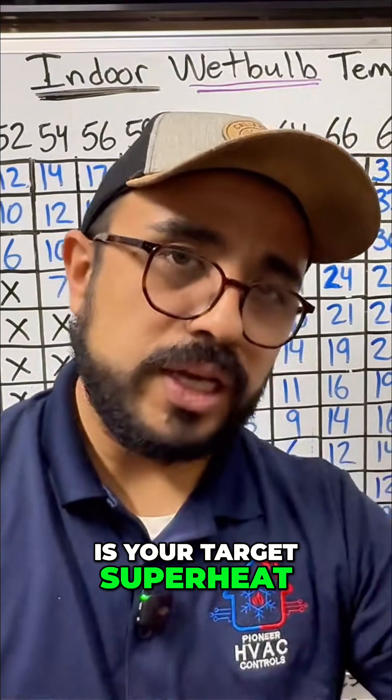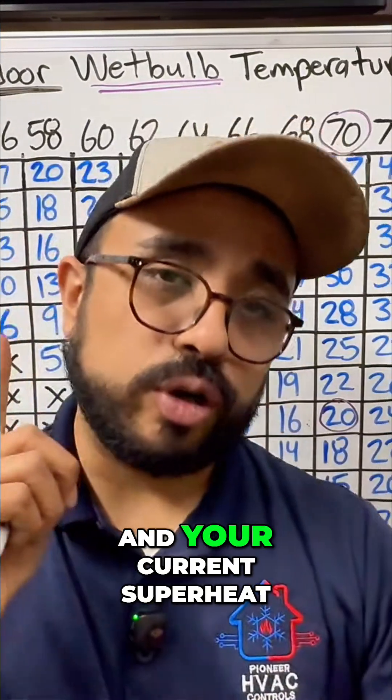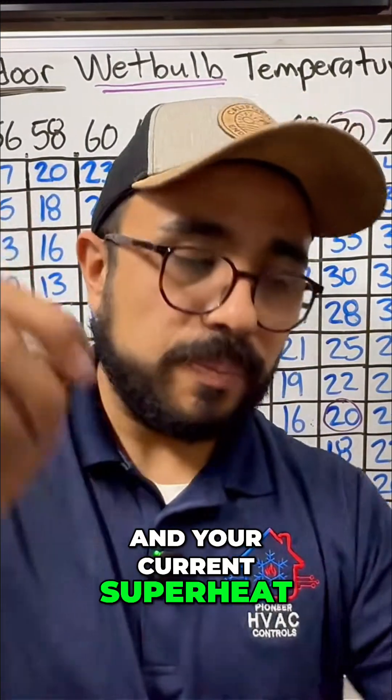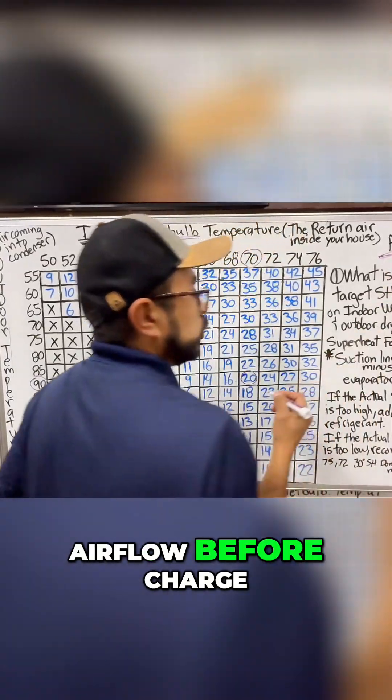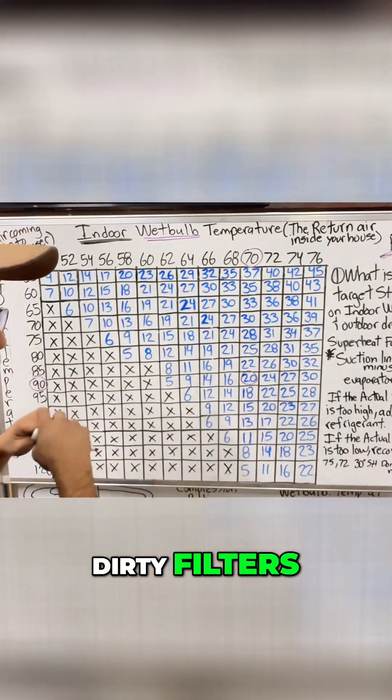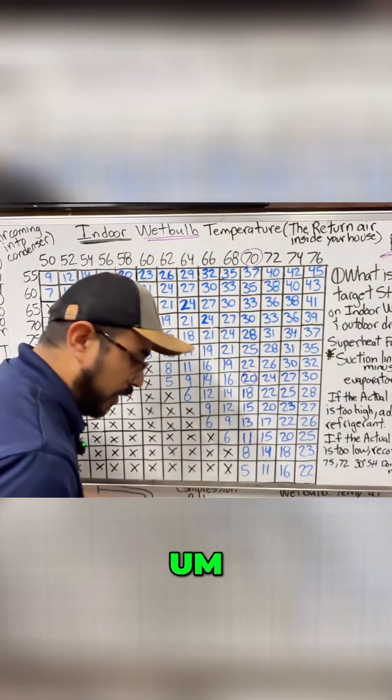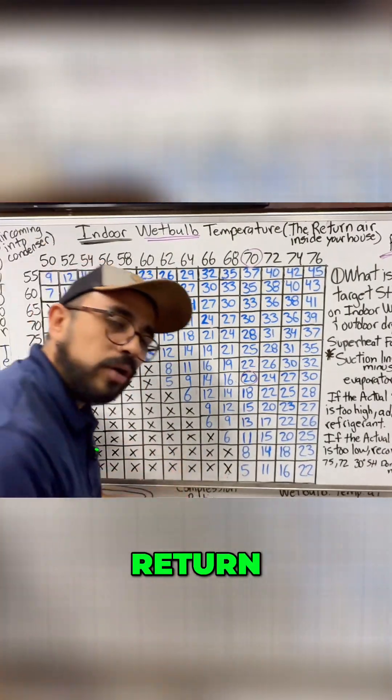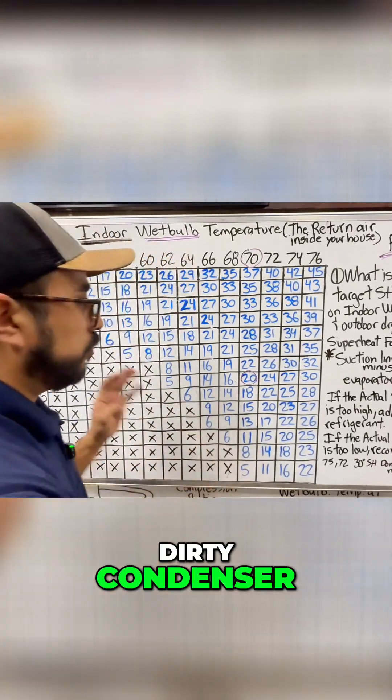One thing is your target superheat based on the numbers and your current superheat—both things are different. ABC's Airflow Before Charge. If your airflow is bad, dirty filters, undersized return, dirty condenser, forget about this.